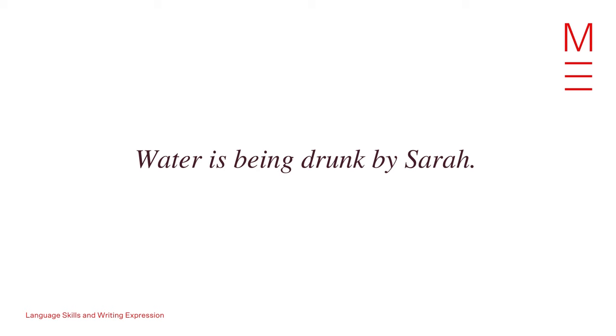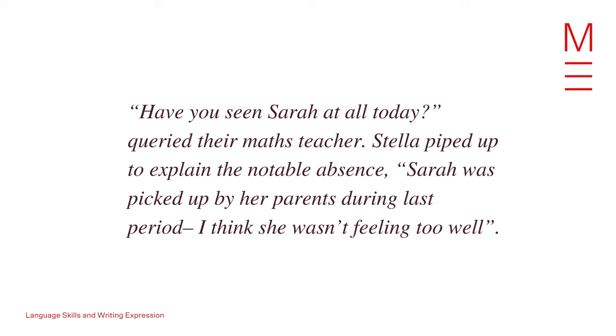If we change the sentence into the passive construction it would look like this: 'Water is being drunk by Sarah.' Here the focus has shifted to the object of the sentence — water. Consciously using the active voice will help your writing become clearer, and if you do use the passive voice, make sure you have a reason for it — for example, a type of emphasis or a certain mood you're going for. 'Have you seen Sarah at all today?' queried their maths teacher. Stella piped up to explain the notable absence: 'Sarah was picked up by her parents during last period — I think she wasn't feeling too well.' Here Sarah is the focus, maintained through the passive construction.